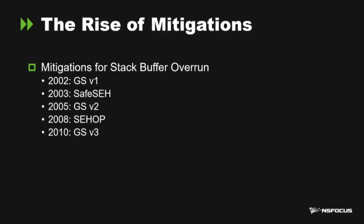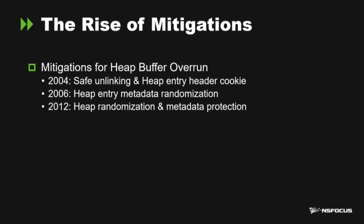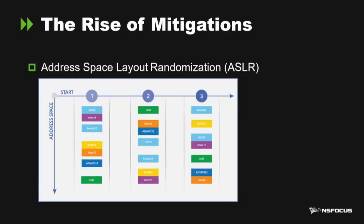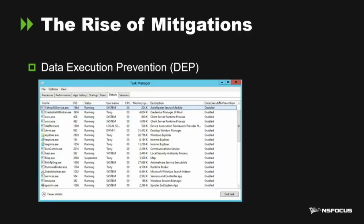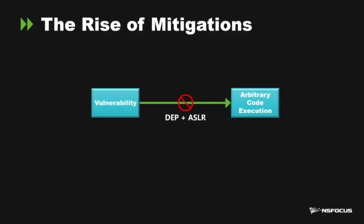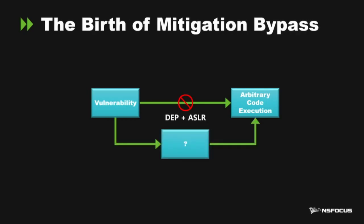Since then, things changed — mitigations were introduced. There are mitigations for stack buffer overrun and for heap buffer overrun. More importantly, there are general mitigations: ASLR and DEP. Together, DEP and ASLR make exploitation difficult. When you find a vulnerability, you can't simply achieve arbitrary code execution anymore — you need to do more work. That's mitigation bypass.